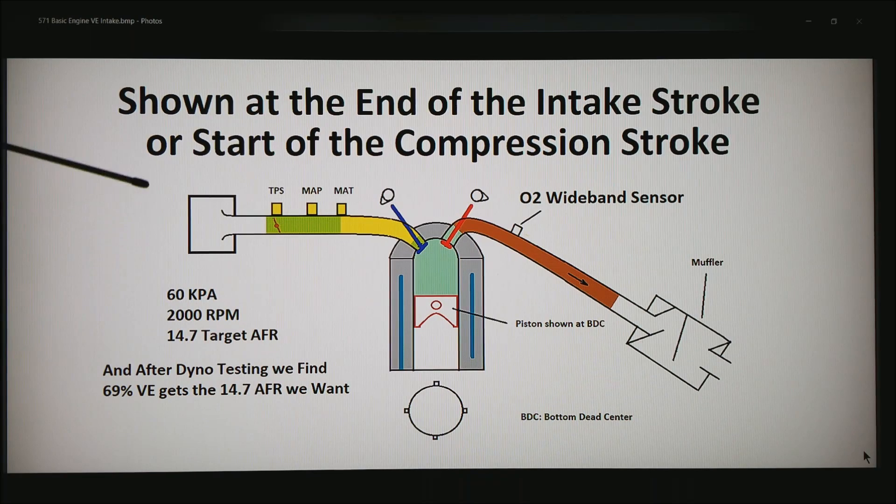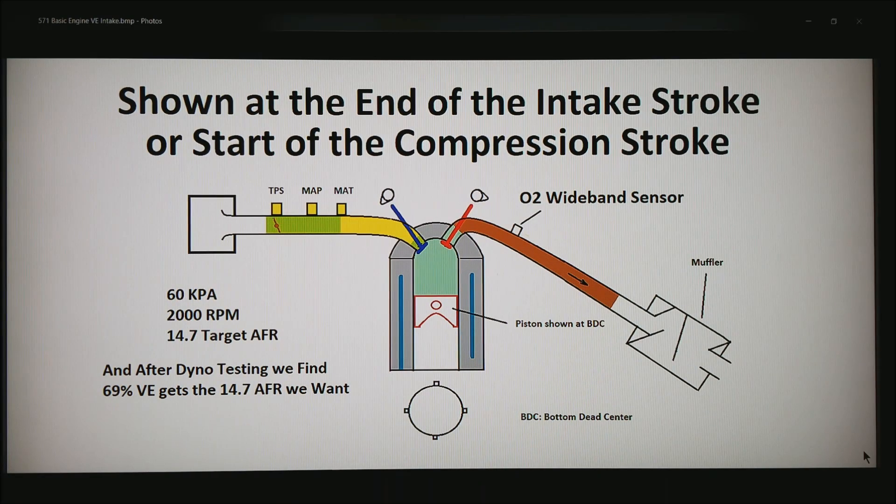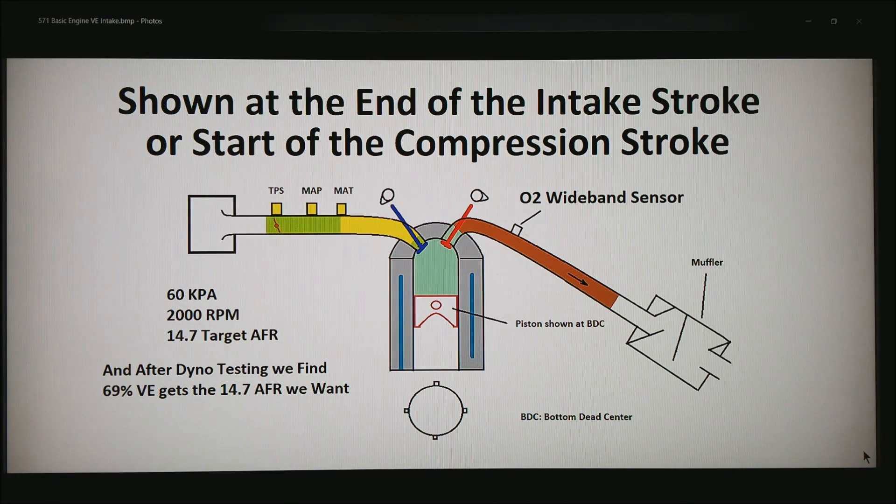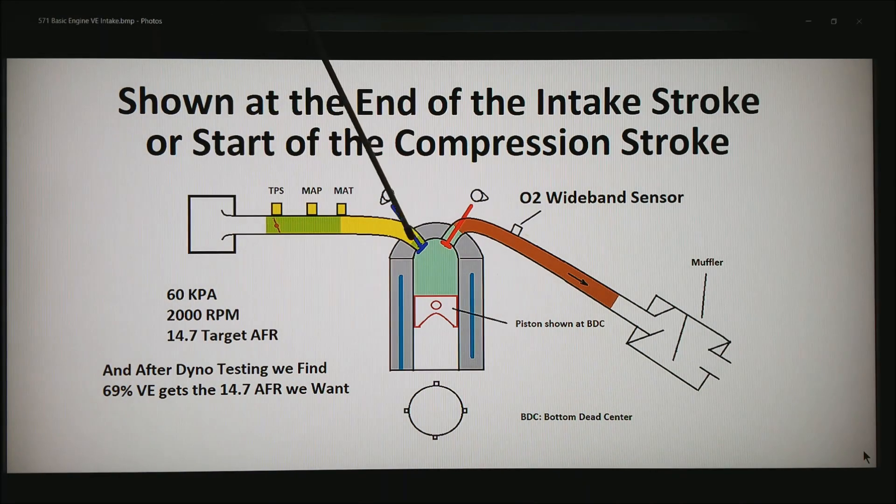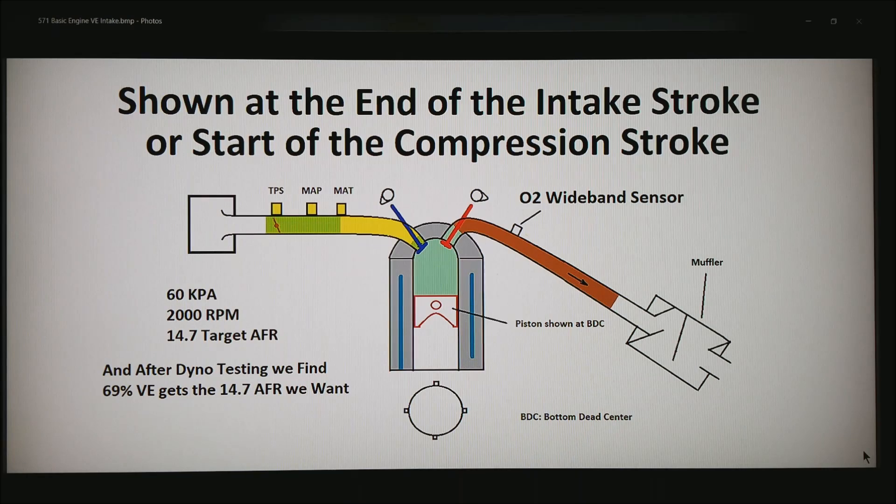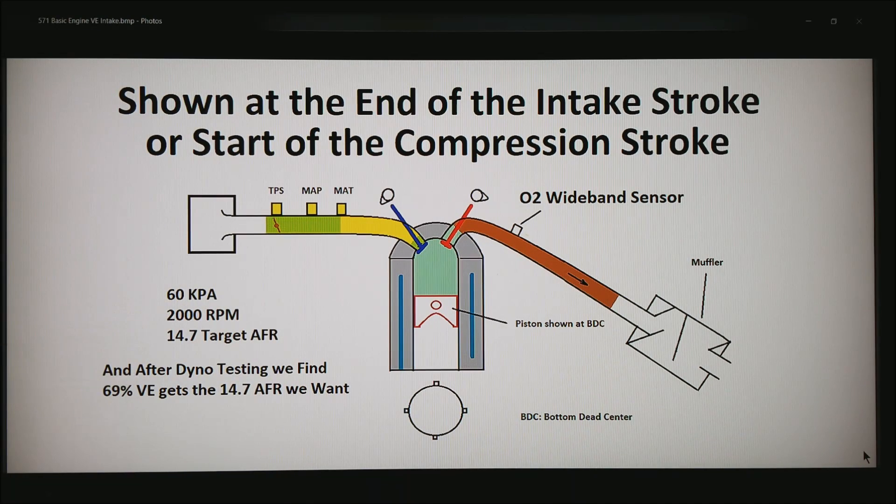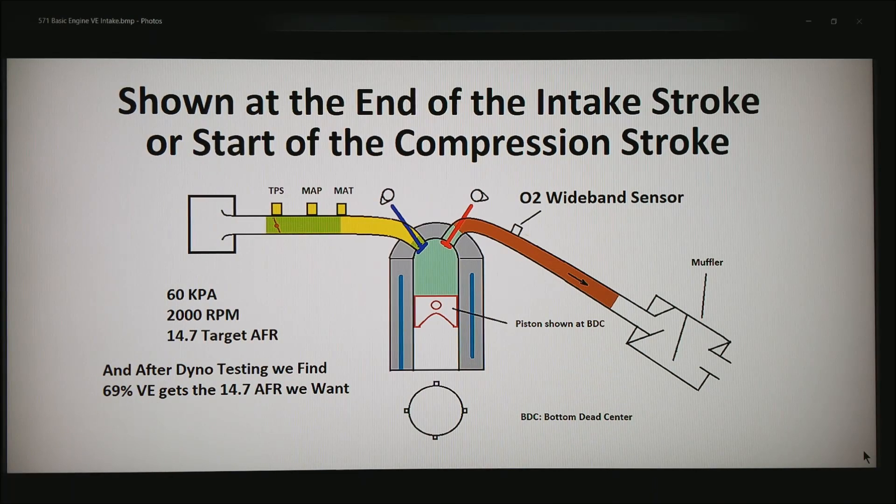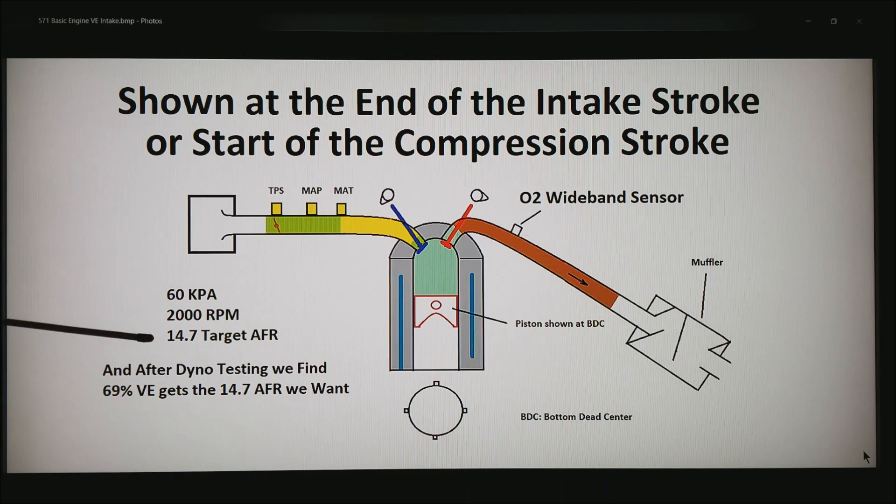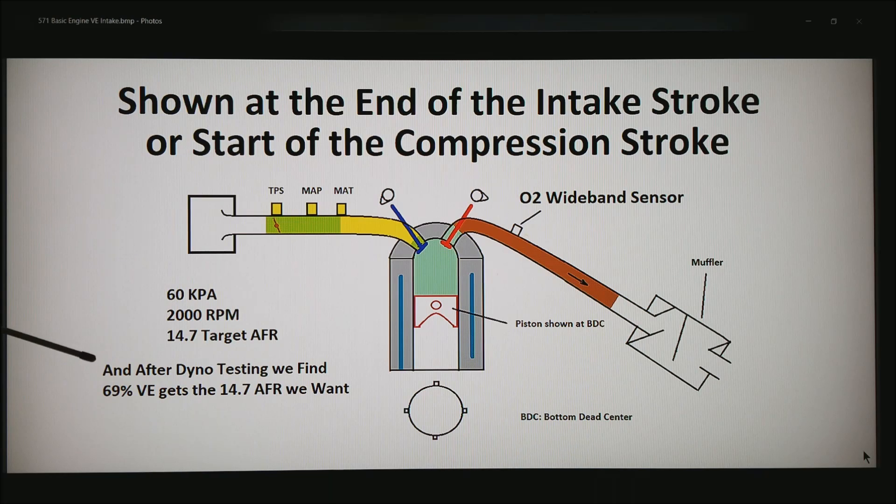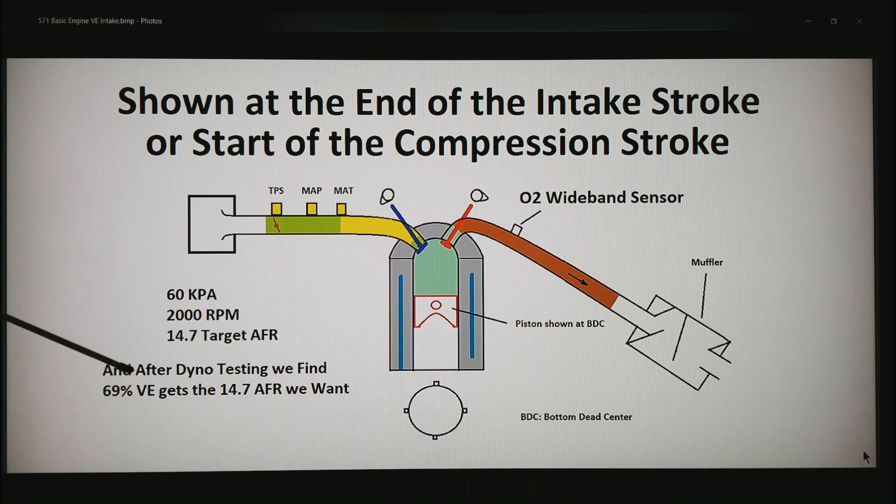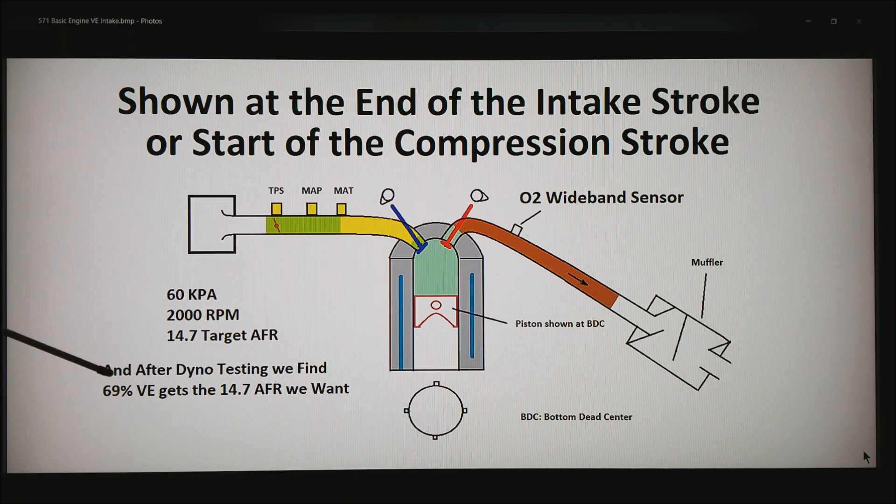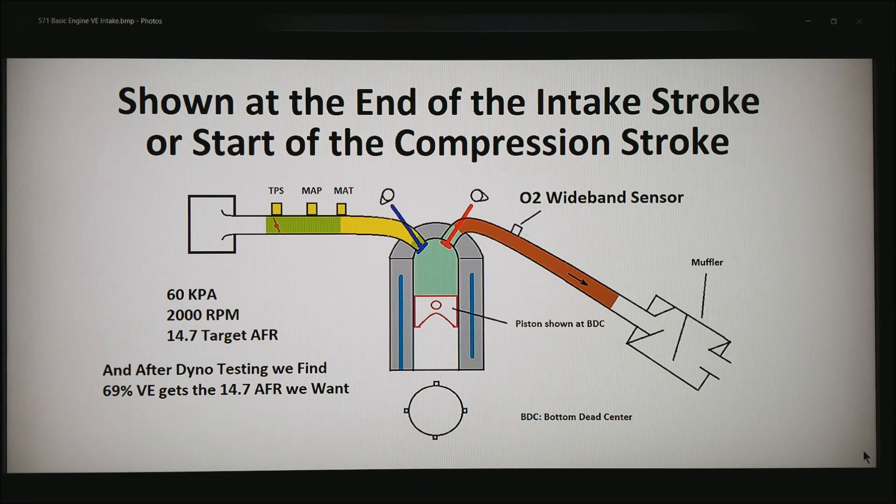So now let's assume that at some point in the power band, we were at 60 kPa or about 60 percent air in the intake manifold between the intake valve and the throttle position sensor. We're at 2000 rpm as measured by the crankshaft position sensors. And we want a 14.7 target AFR in our target AFR table. And we find out on the dyno or from testing and looking at data logs that it takes a 69 in the VE table that we talked about earlier to get to the 14.7 AFR that we're looking for.